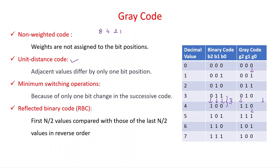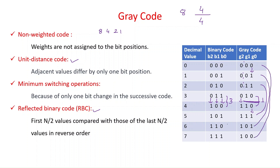Grey code is helpful in K-maps for minimizing Boolean functions due to its unit distance property. It is also known as reflected binary code. If you place a mirror at the halfway point of the code table — for 3-bit grey code, between sample 4 and sample 5 — the lower four values of G1 and G0 are a mirror reflection of the upper four. For instance, 10, 11, 01, 00 are reflected in reverse order below. That is why it is called reflected binary code.